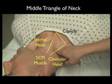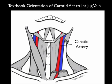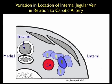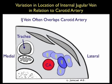Within the middle triangle of the neck run two very important vascular structures. As per the textbook orientation, the carotid artery runs medial to the internal jugular vein, which lies lateral to the artery. However, unfortunately there's great variability in human anatomy, and many times the internal jugular vein can overlap the carotid artery, and is located on top of it, making it difficult to cannulate.